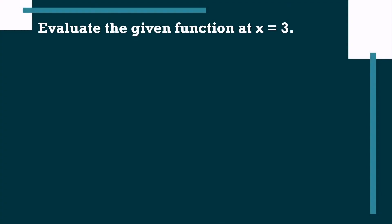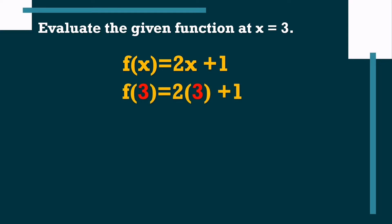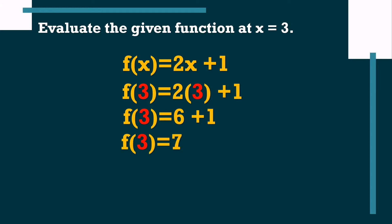Moving on, let's evaluate the given function at x equals 3. We are just going to substitute 3 for x. So we write f(x) equal to 2x plus 1, then replace x with 3: f(3) equals 2 times 3 plus 1. Simplify: 2 times 3 is 6, plus 1 equals 7. So the value of f(x) = 2x + 1 at x equals 3 is 7.